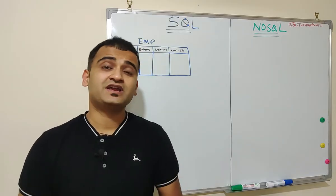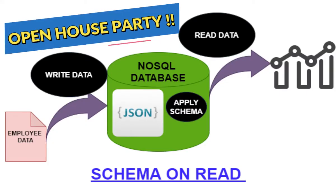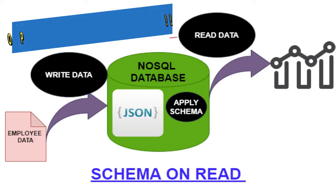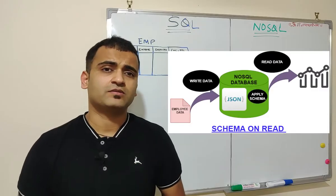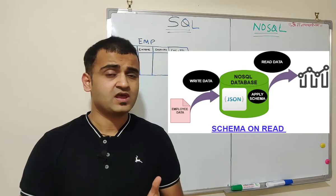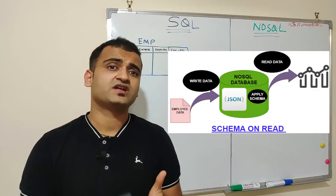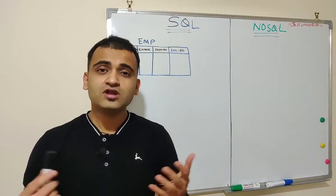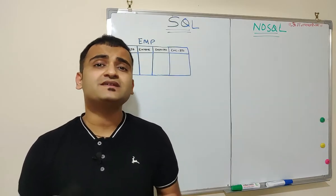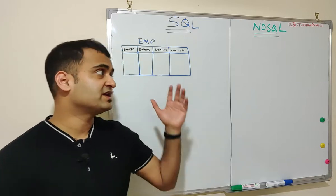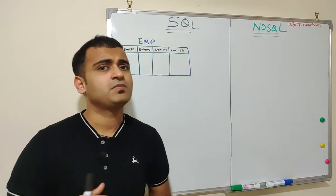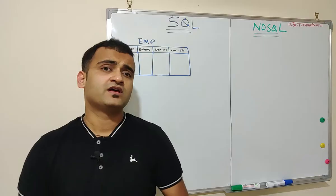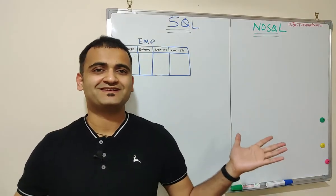But a NoSQL database runs on philosophy of schema on read which means that a NoSQL database is ready to accept any kind of data while it is entering into the system. It can be structured data, it can be unstructured data or it can be semi-structured data. So now as we have a basic understanding of what is a SQL database and what is a NoSQL database, let's dig deep into the concepts with our famous employee table example.